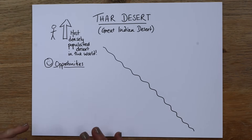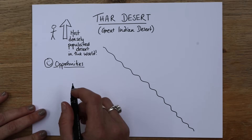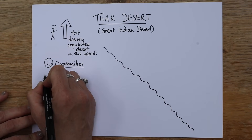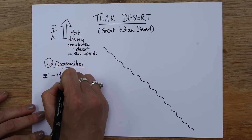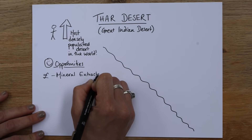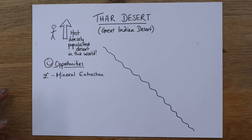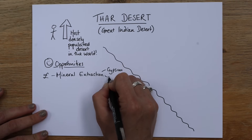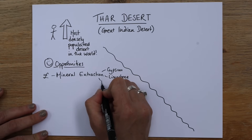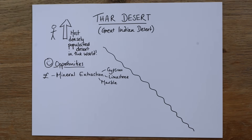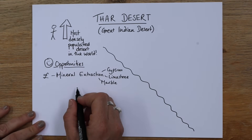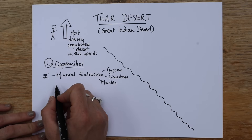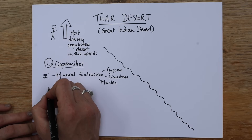There are huge opportunities. Probably the biggest one — and I'll put a pound sign because it's making them lots of money — is mineral extraction. There are various minerals you can extract from the ground in a desert. Three examples are gypsum, limestone — which is really useful and used to make lots of things — and marble. Those are the ones for mineral extraction. That's giving people jobs, contributing to the local economy, and improving people's quality of life by having that work. It's generally low-skill, so it captures a lot of people.